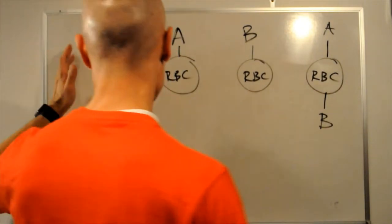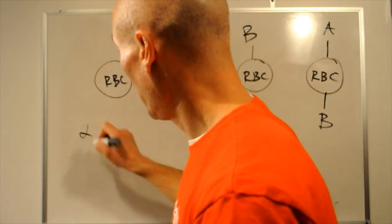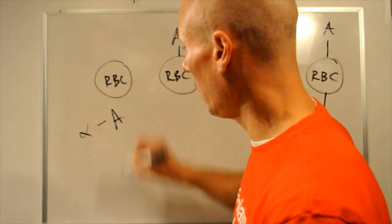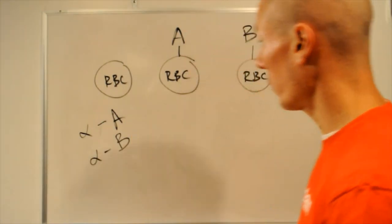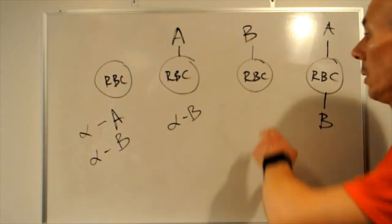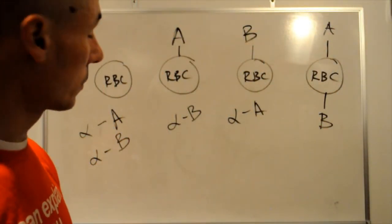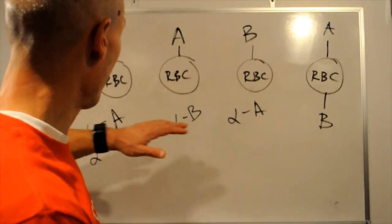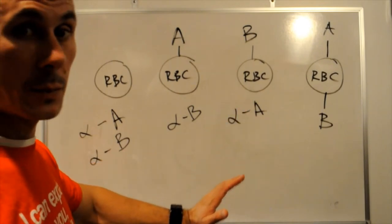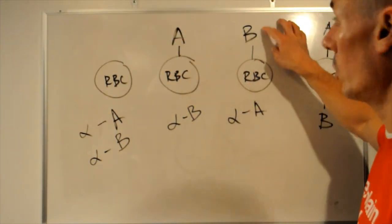So, turns out that this group, which is O, in the plasma has both antibodies, alpha means anti, antibodies against A, and antibodies against B. This one has only antibodies against A, and this has no antibodies at all. So, all in all, we've got red blood cells with or without certain antigens and antibodies. So, what's going to happen if you will transfuse blood group A into the person with the blood group B?